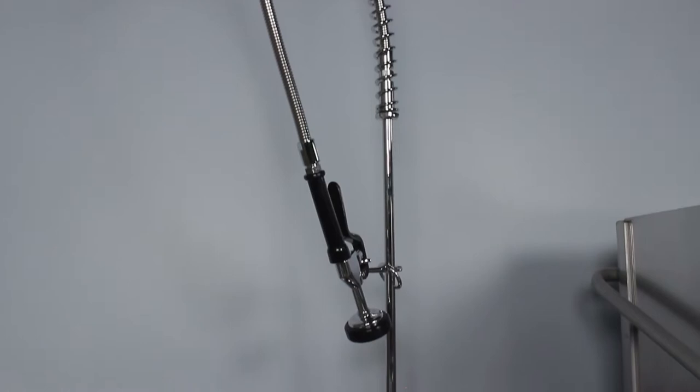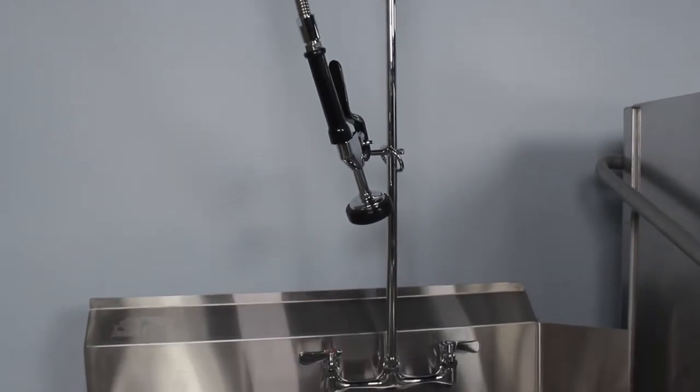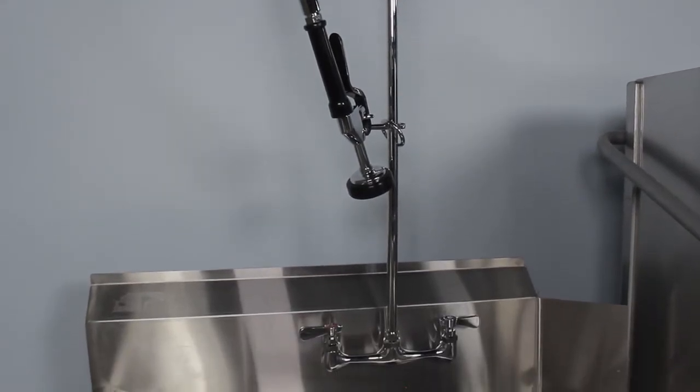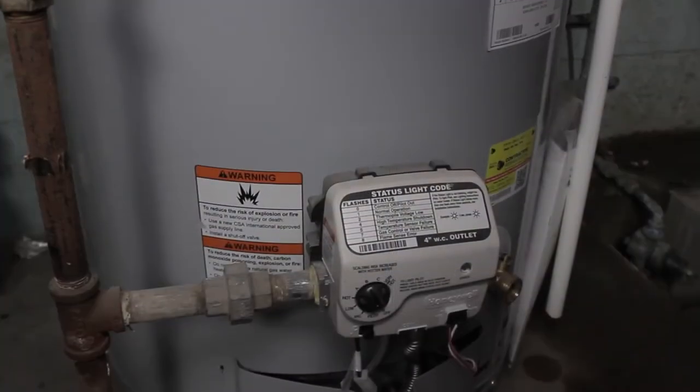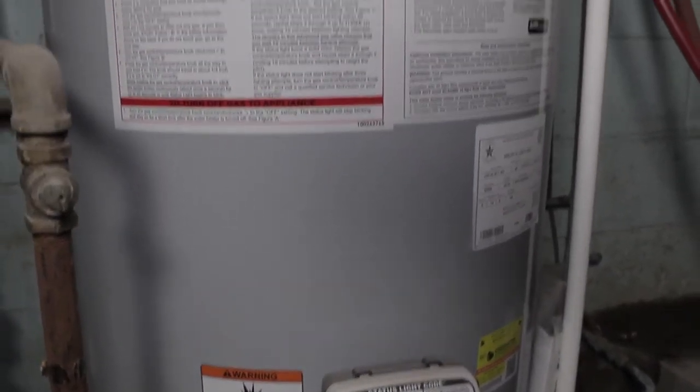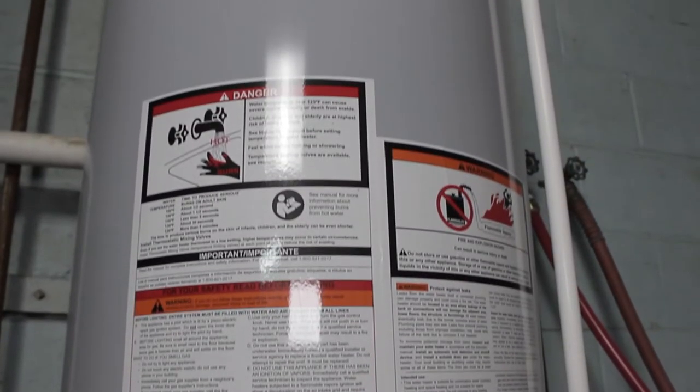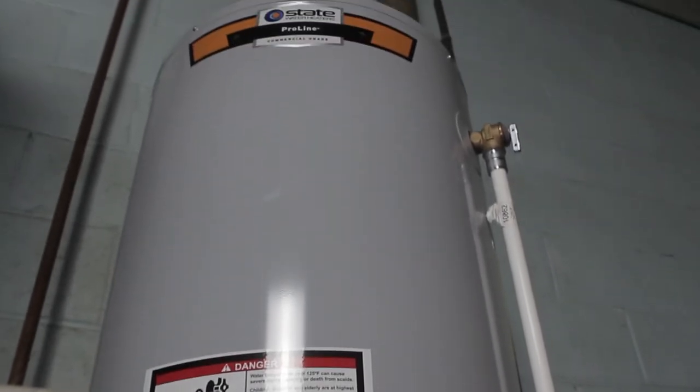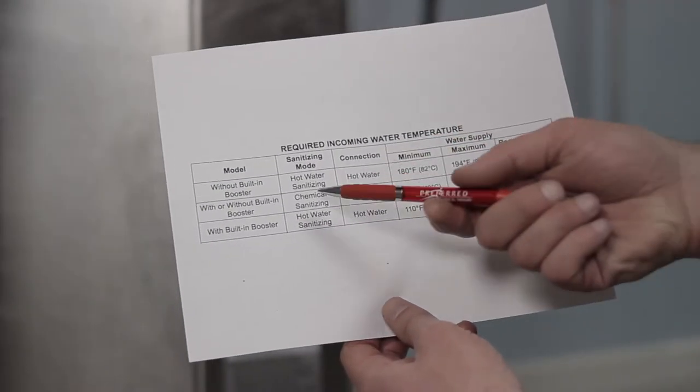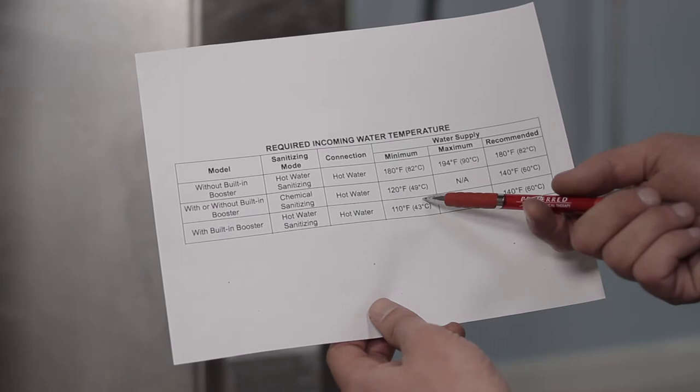Next you can go ahead and hook up your pre-rinse sprayer and faucet. Another thing to consider is the hot water requirements for your machine, and whether or not it comes with a built-in hot water booster. Ours is a low-temp machine that requires a minimum water temp of 120 degrees, and a recommended water temp of 140.